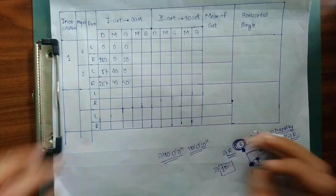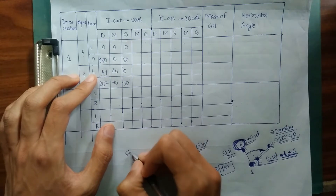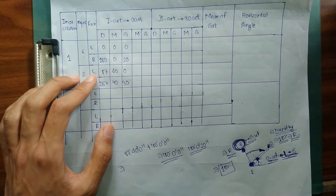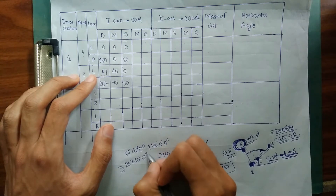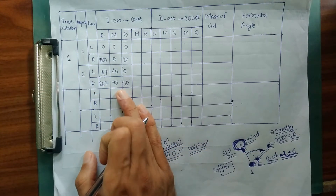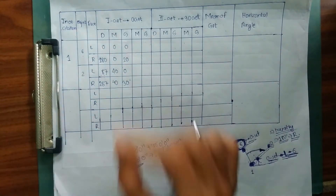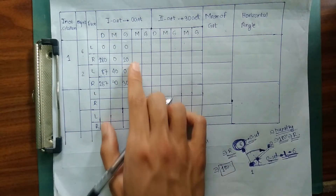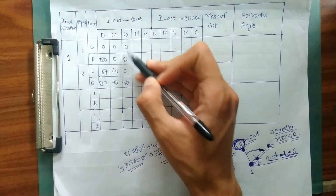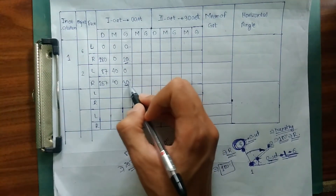With face right condition at station 2 I got 267 degrees 40 minutes 30 seconds. This value should be the face left value plus 180 degrees: 87 degrees 40 minutes 0 seconds plus 180 degrees equals 267 degrees 40 minutes 0 seconds. But I got 267 degrees 40 minutes 30 seconds, so there is an error — the observed value is 30 seconds more here, while the previous observed value was 20 seconds more.